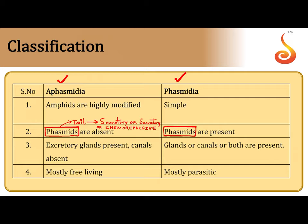These Phasmidial glands or Phasmids are present near the tail, near the anus or the cloaca. They may be secretory, excretory, or chemorepulsive — helping the animal repel from dangerous chemical substances. If these glands are present in the worm, we place the worm in the class Phasmidia. If they are not present, we place them in the class Aphasmidia.